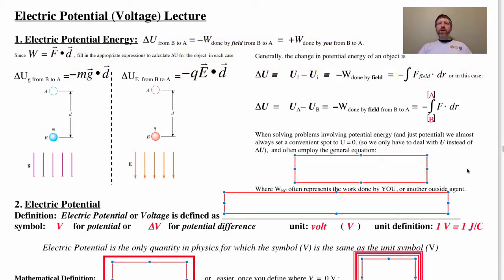So when we're solving problems involving potential energy, and in fact, anytime we use potential, this is almost always true as well, first of all, you've got to set a convenient spot to U equals zero. Many times that's infinity. And once we do that, once we set that spot equal to zero potential energy, it becomes very easy to calculate delta U.